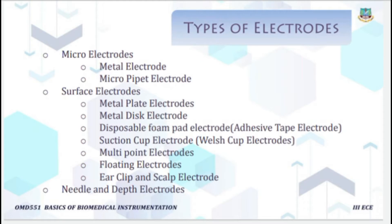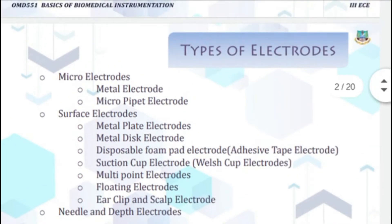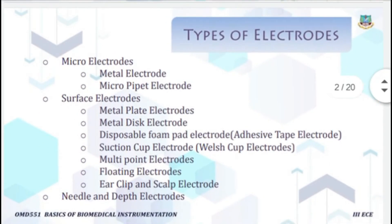There are three types of electrodes: micro electrode, surface electrode, and needle and depth electrode. The micro electrode is of two types: metal electrode, also called metallic electrode, and micro pipette electrode, also called non-metallic electrode. Surface electrodes include metal plate electrode, metal disc electrode, disposable foam pad electrode, suction cup electrode, multipoint electrode, floating electrode, and ear clip and scalp electrode.